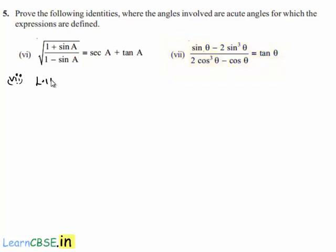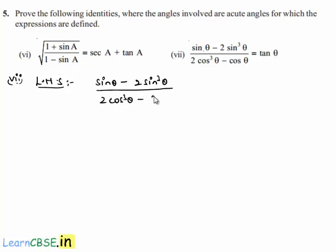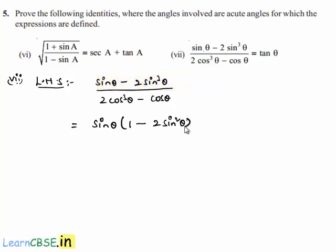In order to prove this, let us consider the left hand side, that is sin theta minus 2 sin cubed theta divided by 2 cos cubed theta minus cos theta. In the numerator, let us take sin theta as common, then we get the numerator as sin theta into 1 minus 2 sin squared theta.